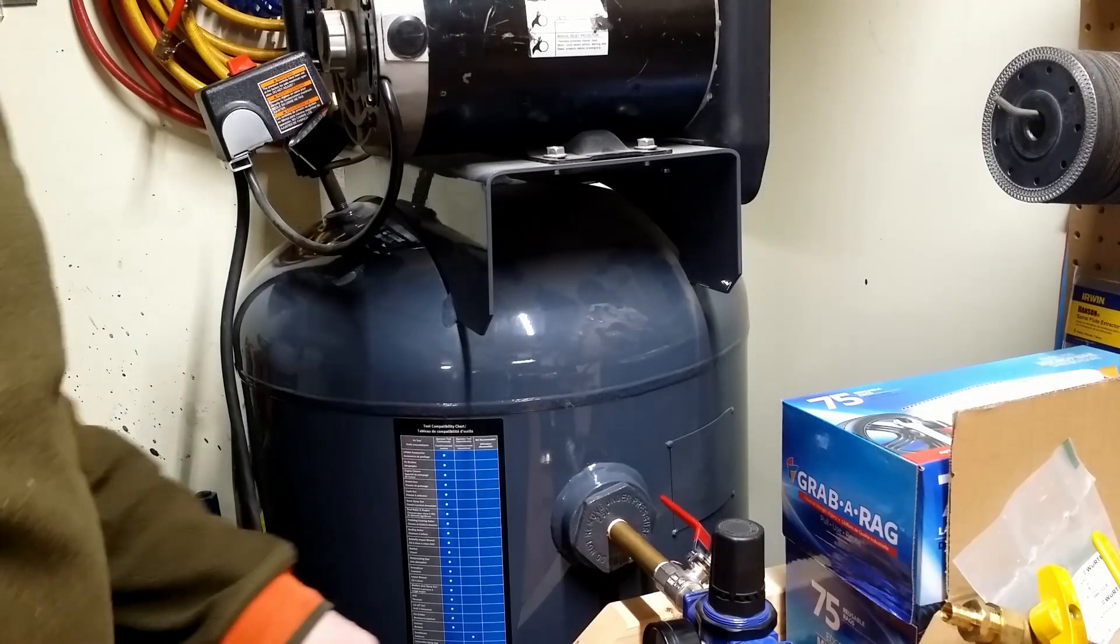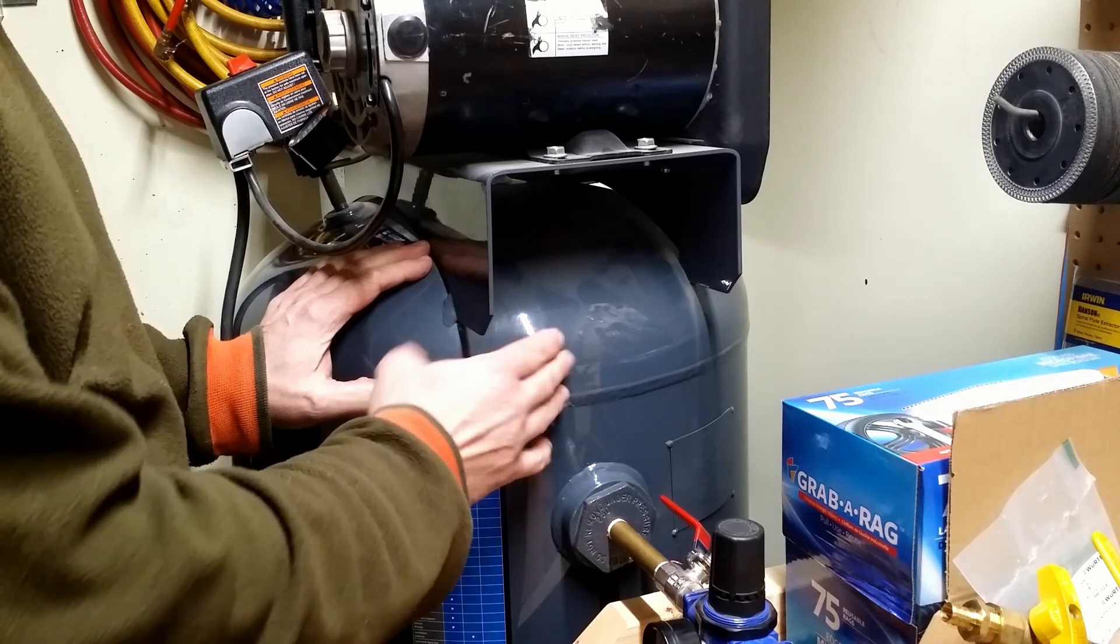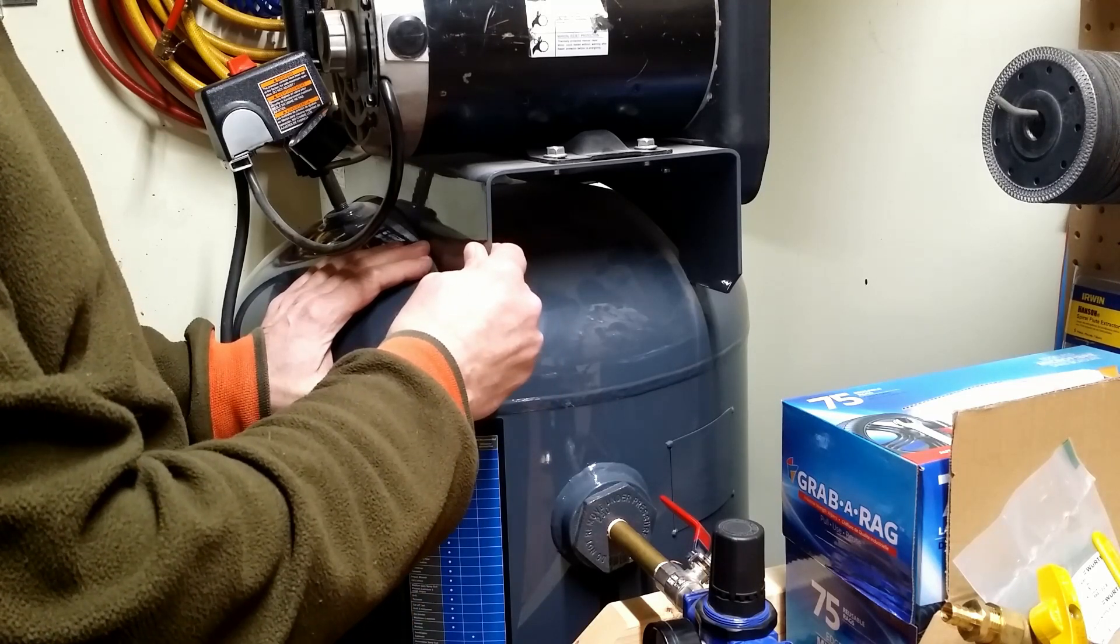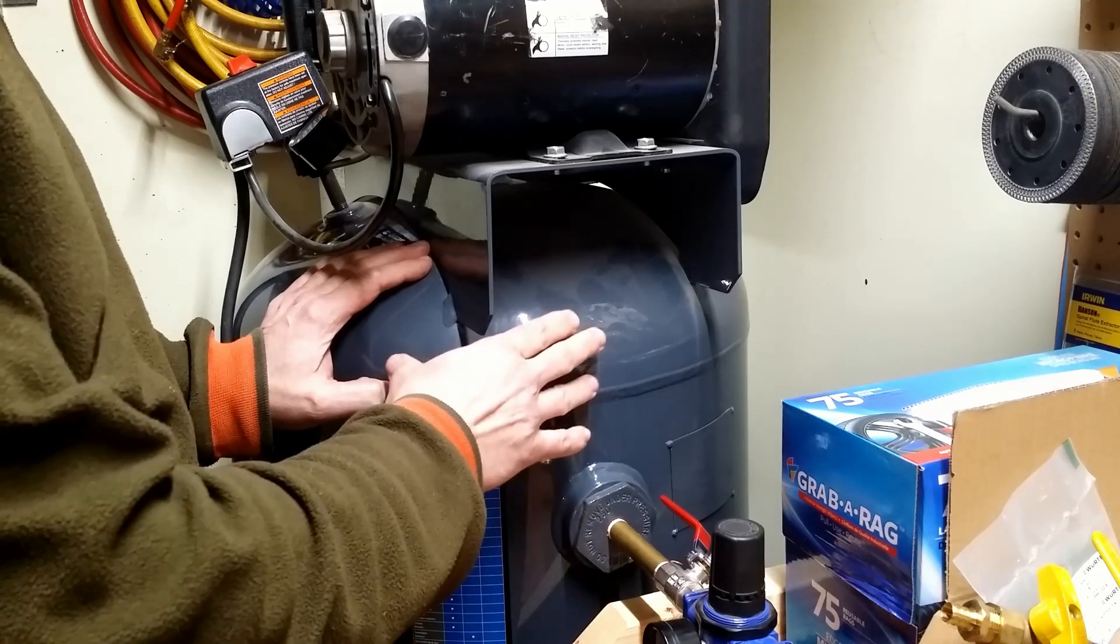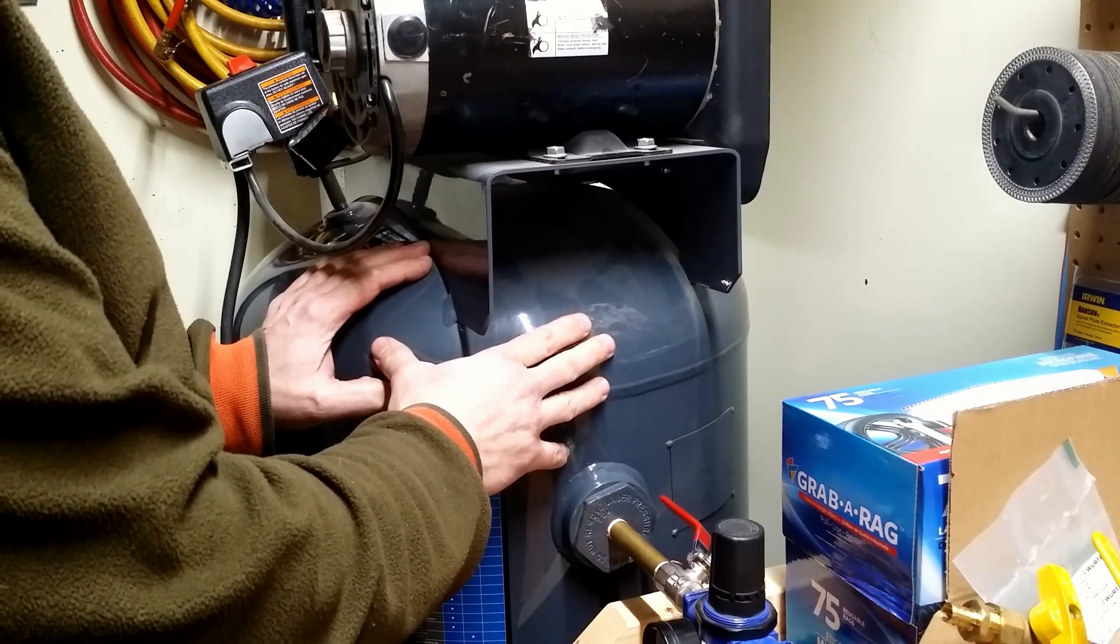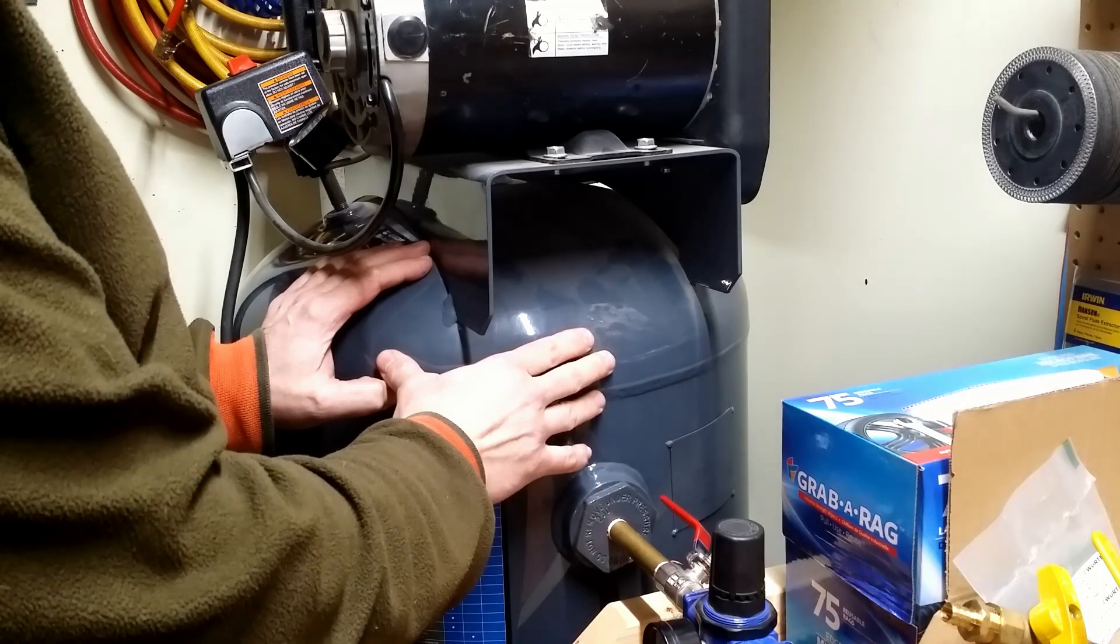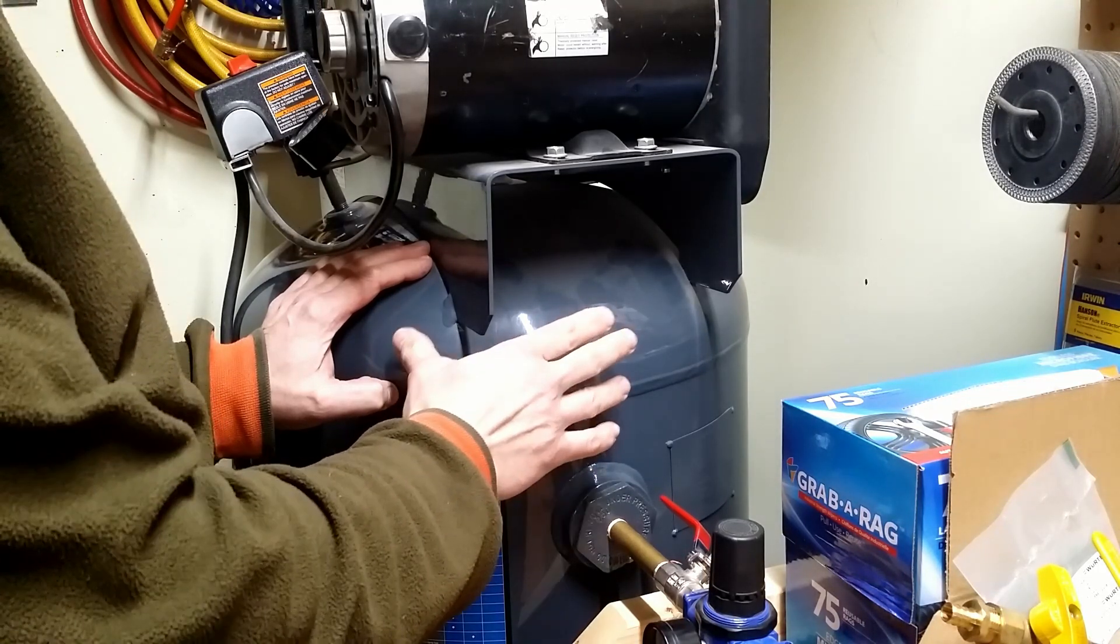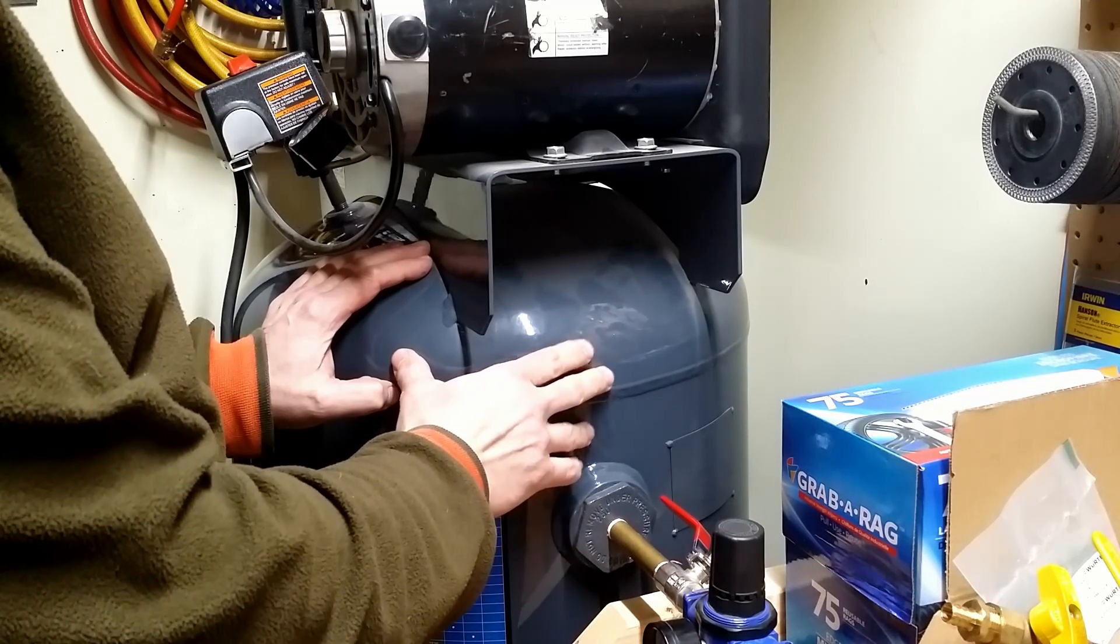I will start my project with hydro testing the tank. I will fill it with water, close all ports and apply pressure from a pressure washer. The testing will be done at 150% of the working pressure of this tank. It is specified to be 150 PSI so I will test it at 225 PSI. Why do I test it with water?